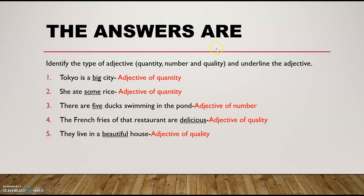Alright, now let's see the answers. Number one: 'Tokyo is a big city.' Here, 'big' is the adjective, and this is the adjective of quality. Number two: 'She ate some rice.' Here, 'some' is the adjective, and this is the adjective of quantity. Number three: 'There are five ducks swimming in the pond.' 'Five' is the adjective and it's an adjective of number.